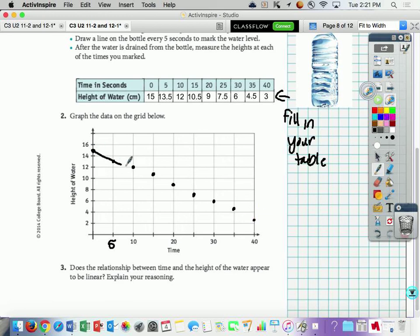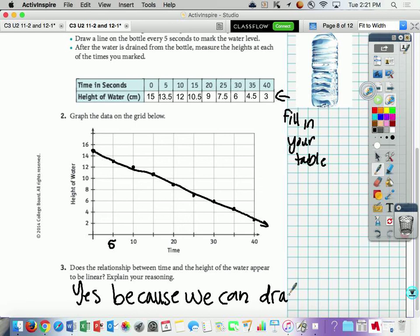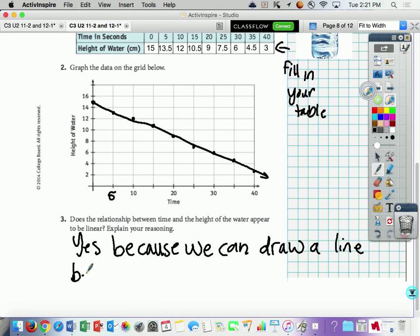All right, we're going to use our ruler and connect our dots. All right, it's okay if some of your dots aren't exactly on the line because these were hard to graph. All right, does the relationship between time and the height of the water appear to be linear? Yes, because we can draw a line through them. We can draw a line through the points. All right, so it's linear if it looks like a line, which makes sense because we have linear. Linear, so it has to look like a line.